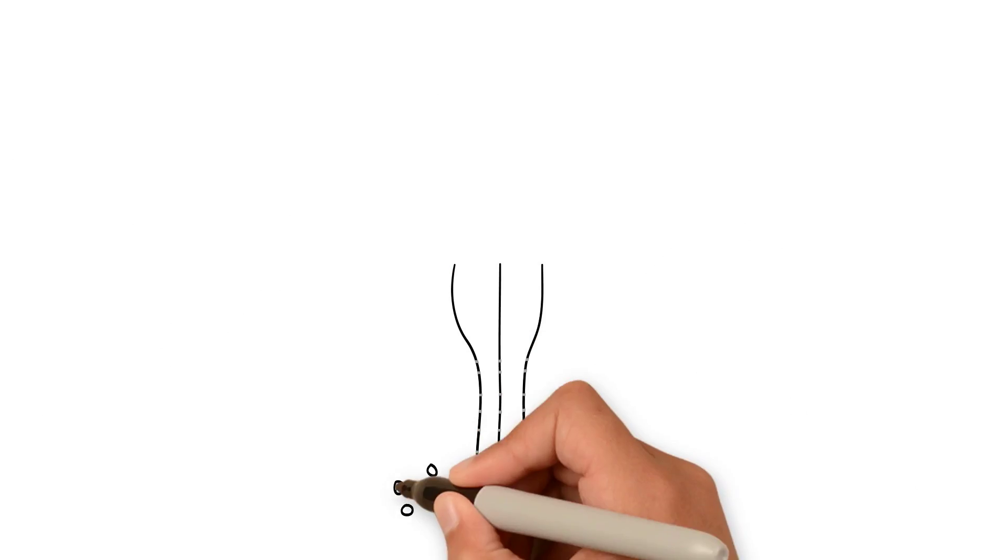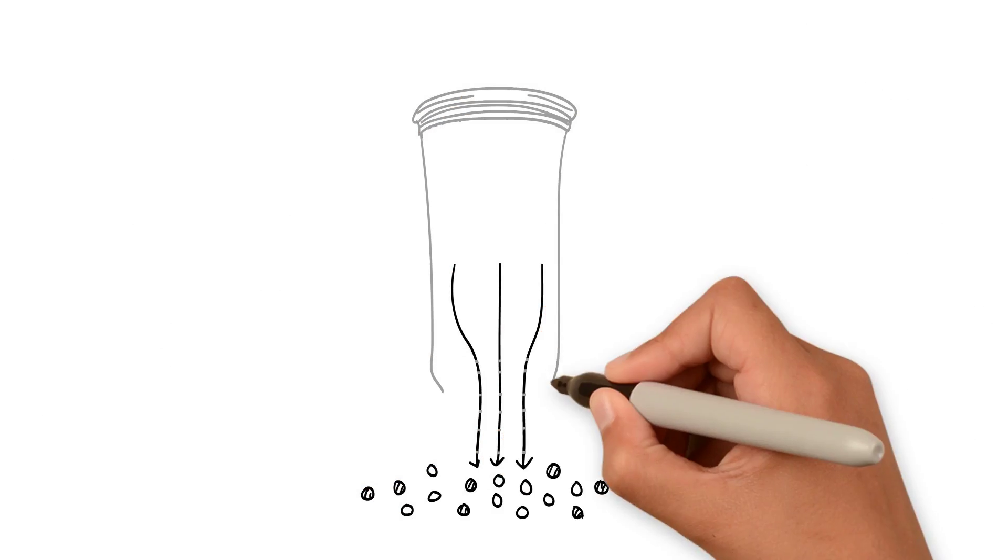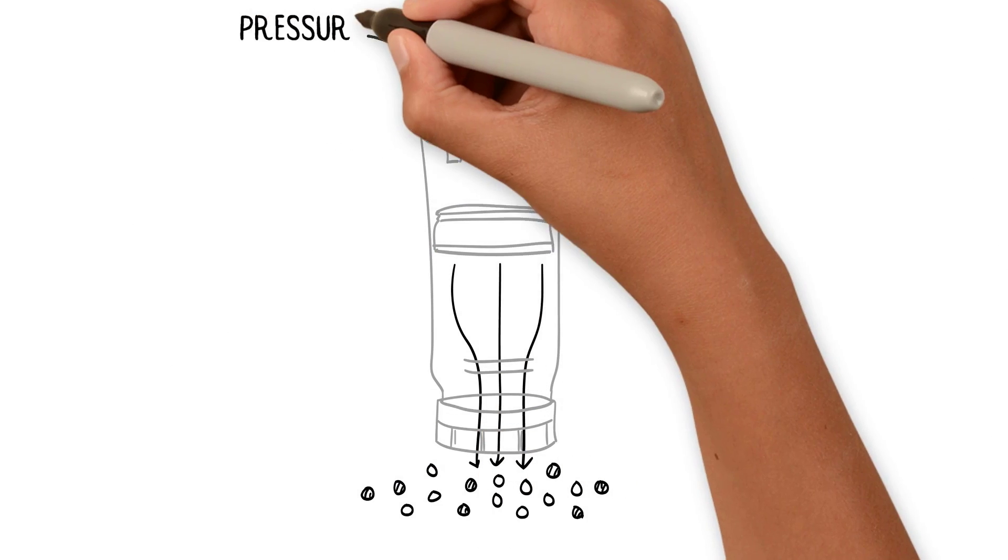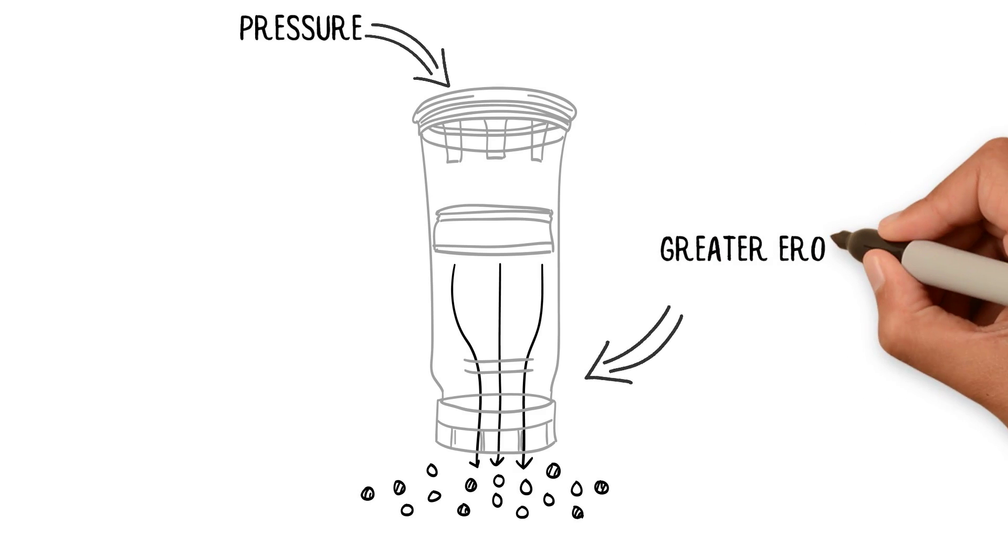The UMPS specially designed inner chamber narrows towards the filter, accelerating the flow rate, concentrating the pressure where it's needed, and eroding more of the insoluble coffee with much less effort.